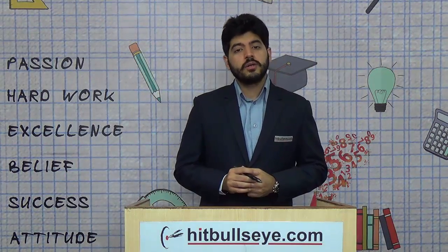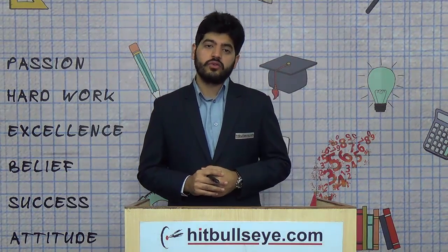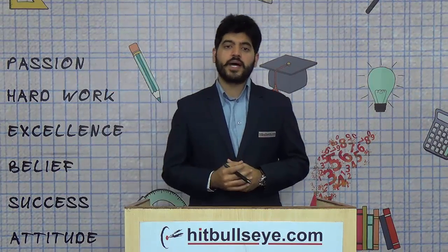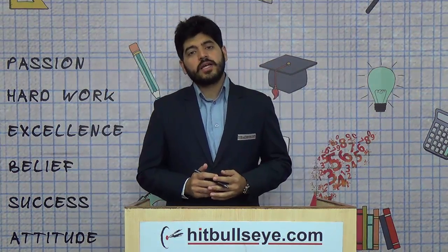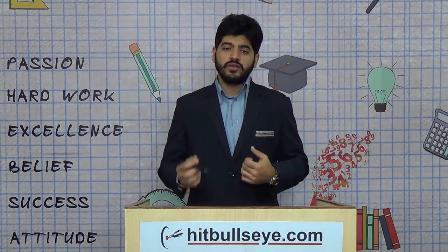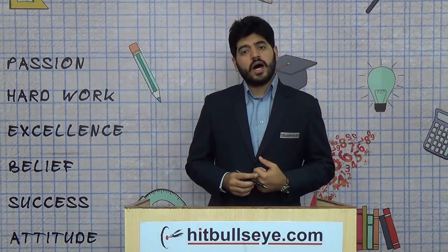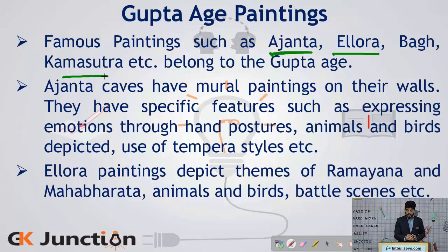The next important period worth discussing is the Gupta Age paintings. In the Gupta Age, all the famous paintings we discuss today are found. For example, Ajanta, Elora, Baag, and the Kama Sutra paintings — all these belong to the Gupta Age.